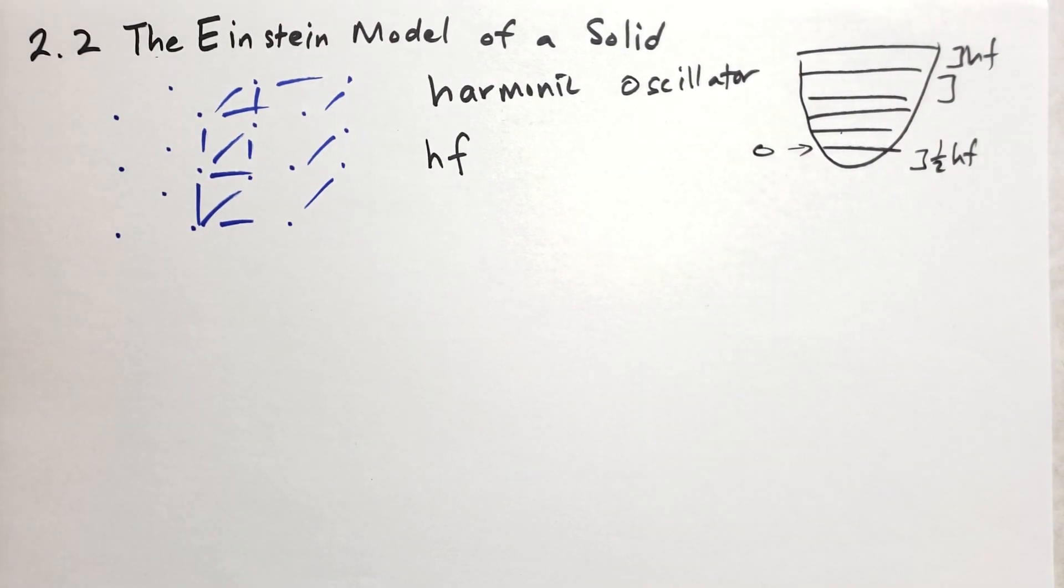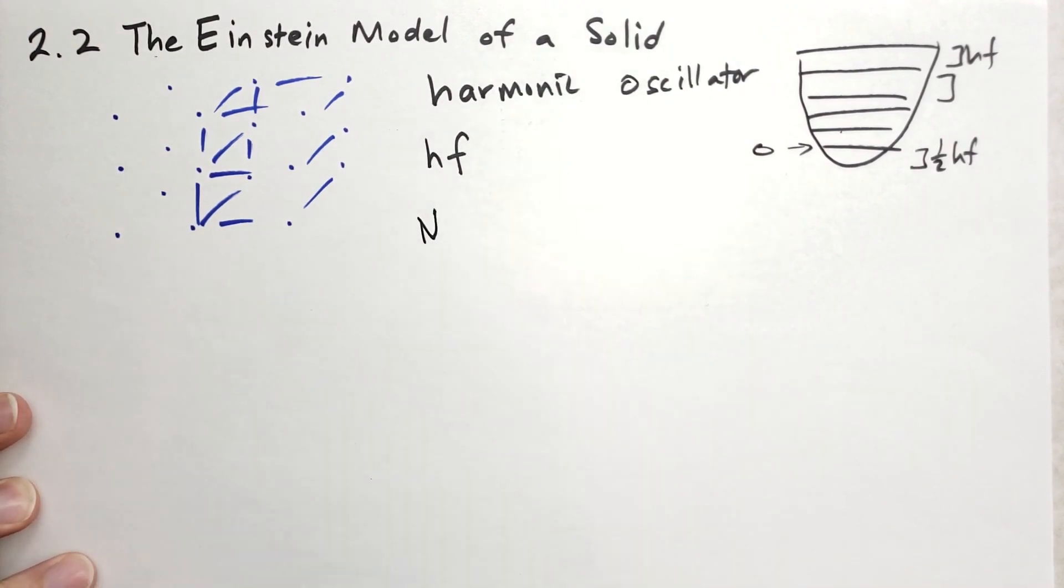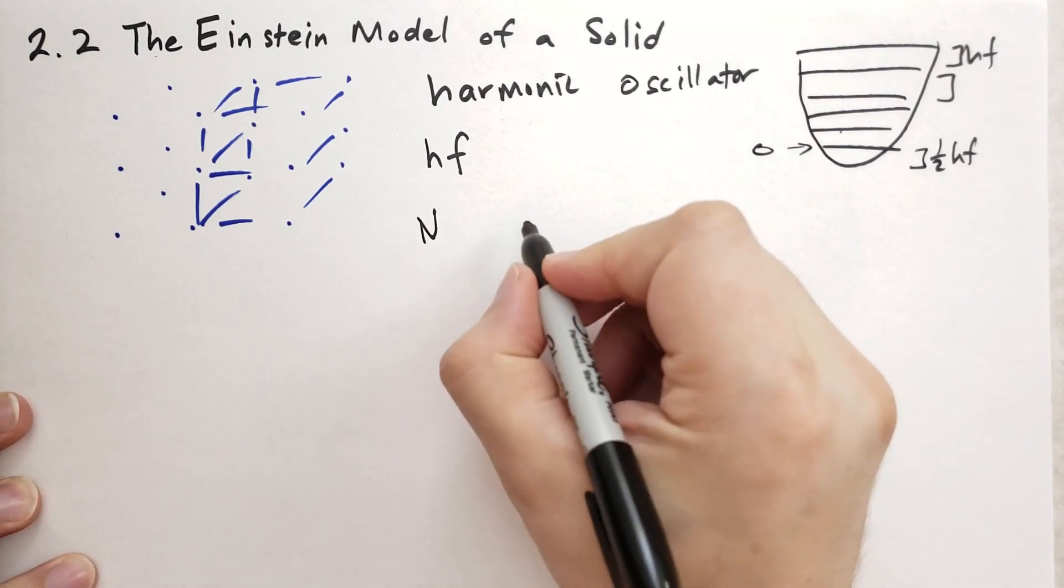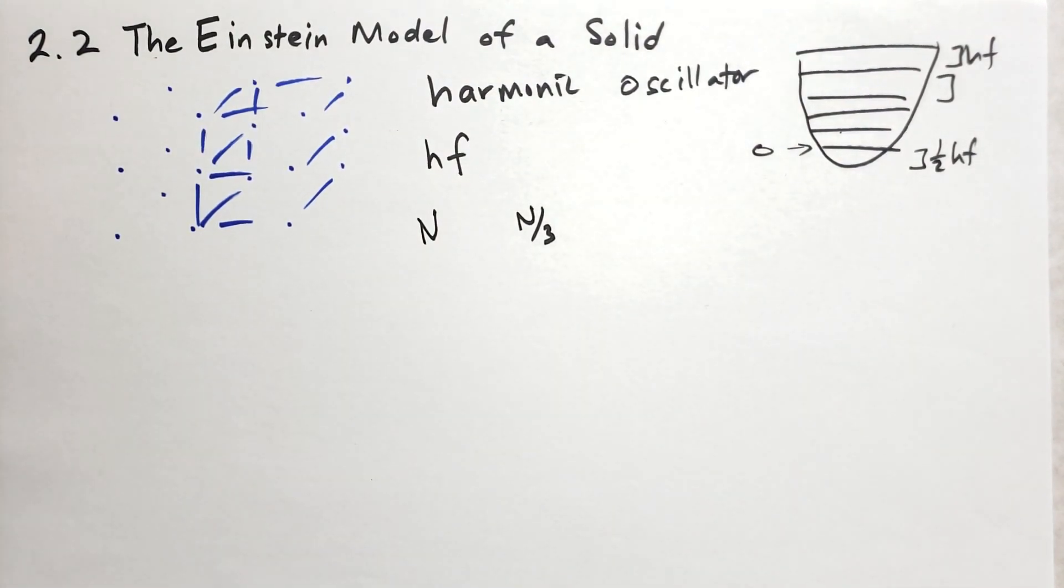Albert Einstein proposed this model of a solid in 1907, and it's called an Einstein solid. An Einstein solid has N degrees of independence, N oscillators, which means there's N over three atoms or molecules in this three-dimensional solid, because each atom can oscillate in three different directions, x, y, and z.